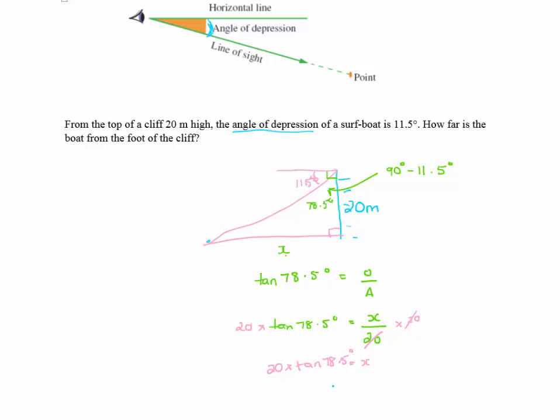And we can pop that into our calculators and our calculators give us x being the value of 98.301 etc. It's a good idea to write down as many decimal places as you like and then do your rounding.